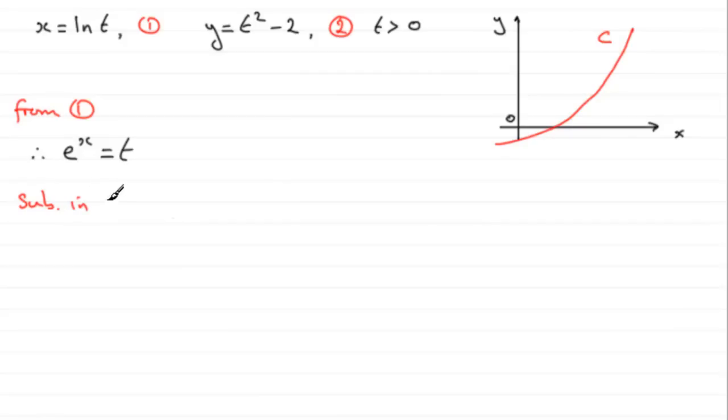So therefore, what we have is that y equals t squared, which is e to the x all squared, minus 2. Well, you could leave it like that, I suppose, but e to the x all squared is exactly the same as e to the 2x. So I think I'd go for y equals e to the 2x minus 2.